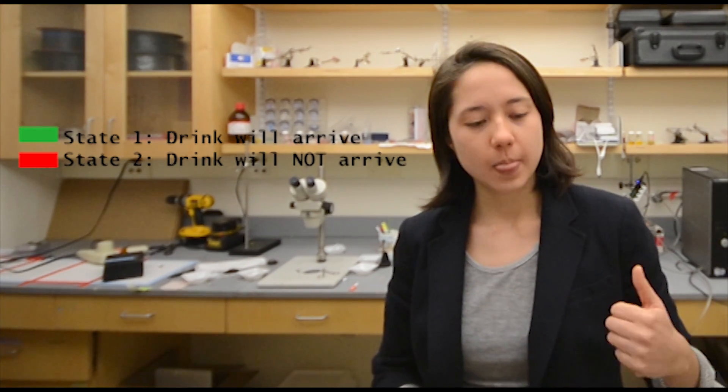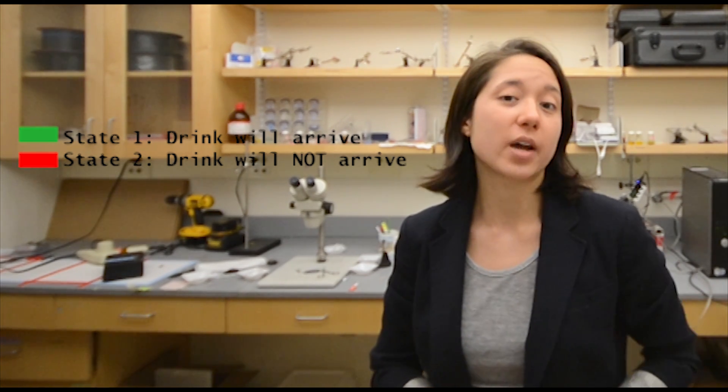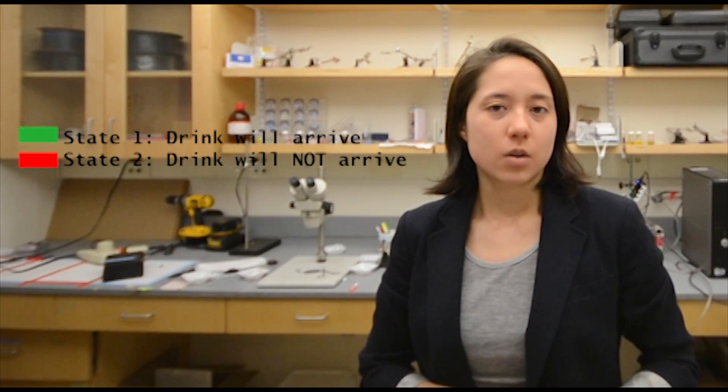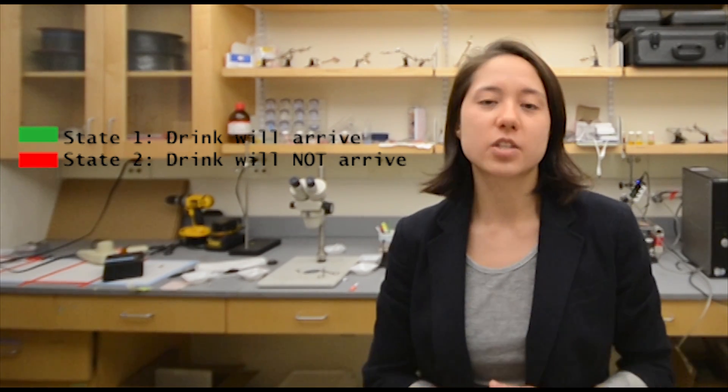Imagine you're at a dive bar and you order a drink. Usually at this bar, it takes about five minutes for your drink to arrive, but occasionally, say in 10% of cases, the bartender completely forgets your order. We can think of this situation using two states: one, where your drink will arrive, and two, where your drink will not arrive. We can't know for certain which state we're in when you first order a drink. Hence, there is state uncertainty.